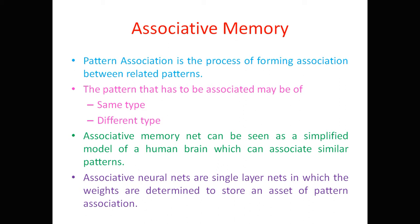Associative neural nets are single-layer nets in which the weights are determined to store a set of pattern associations. These are single-layer networks — there are two layers, input layer and output layer, but the computation is essentially done in one layer. The weights have to be determined in such a way to store the sets of pattern associations, meaning input and target may be different, but we design the weights to create the association between those two patterns.